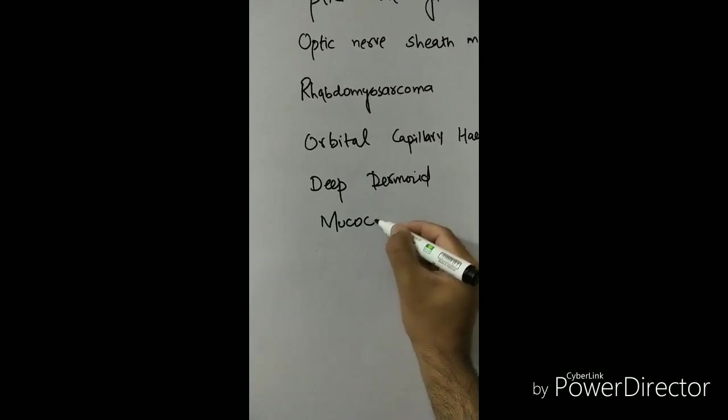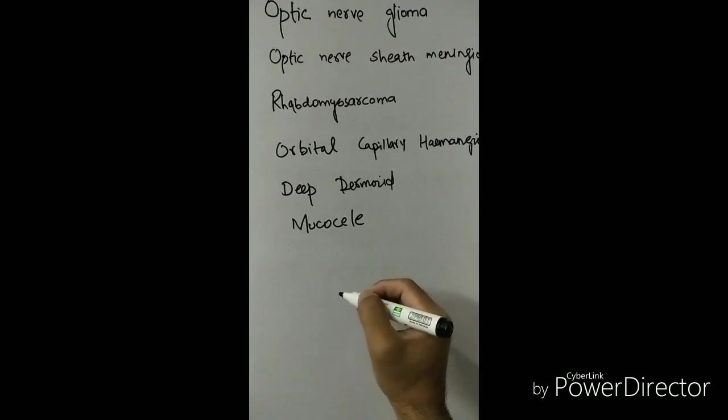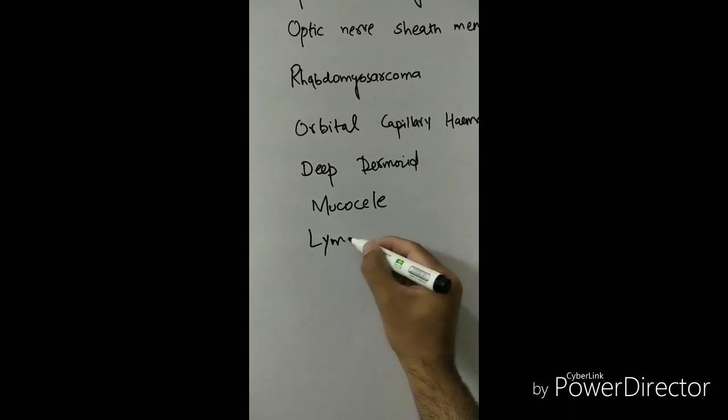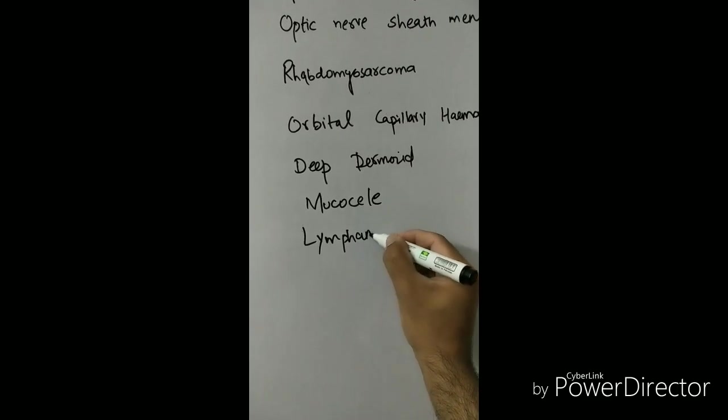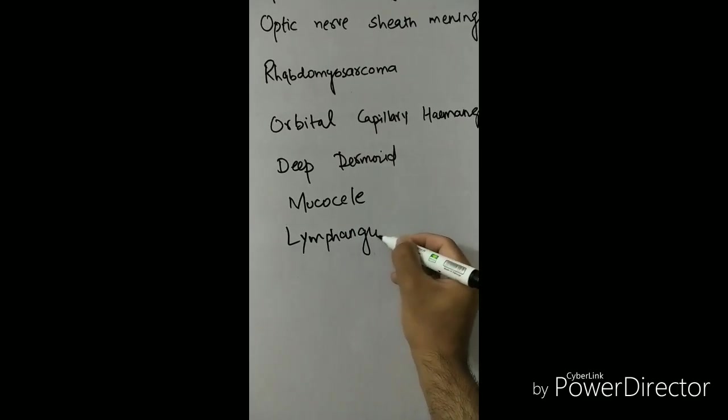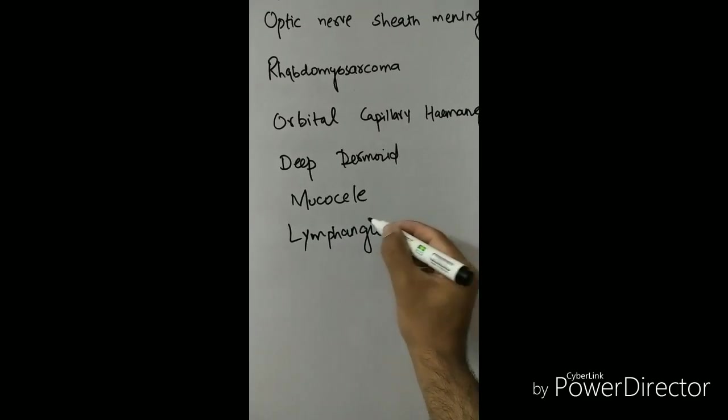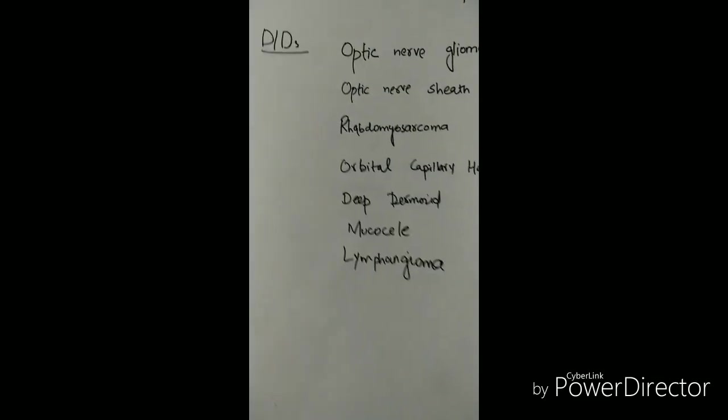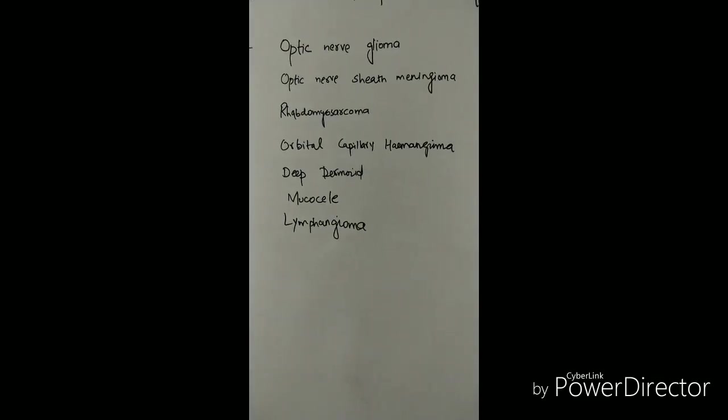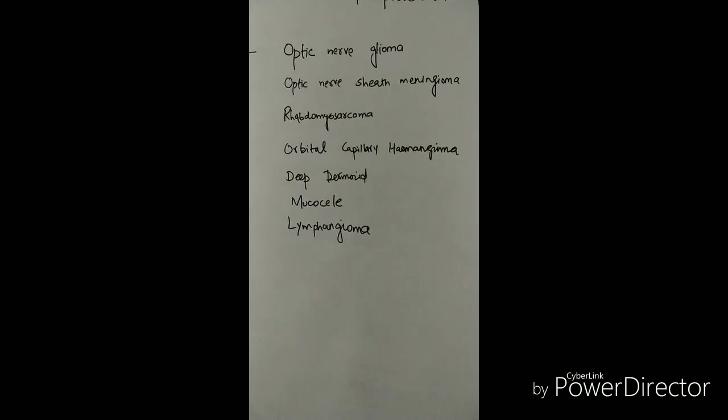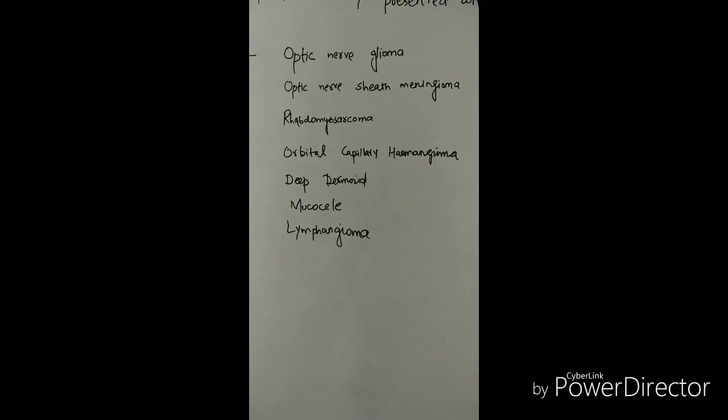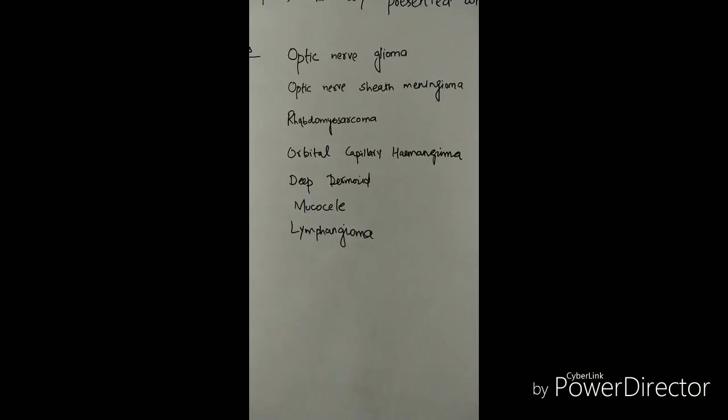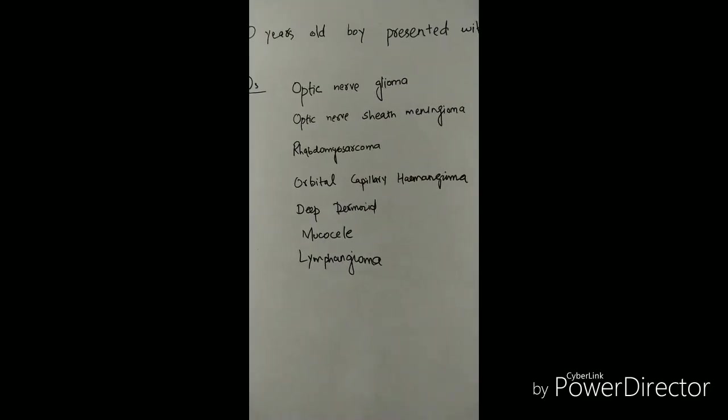In rhabdomyosarcoma there is proptosis, and in lymphangioma there is a sudden decrease of vision and proptosis with inferior dystopia. With inferior dystopia, and when sudden painful loss of vision occurs that is due to hemorrhage. So hemorrhages into those cysts that is known as chocolate cysts.